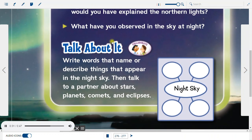What have you observed in the sky at night? Talk about it. Write words that name or describe things that appear in the night sky. Then talk to a partner about stars, planets, comets, and eclipses.